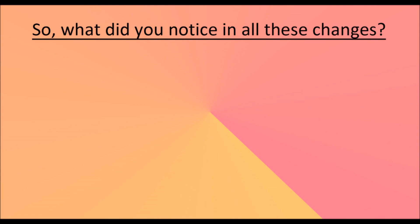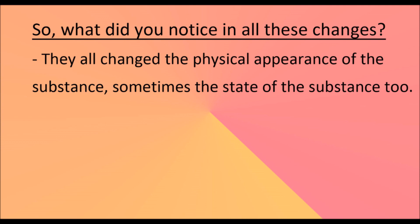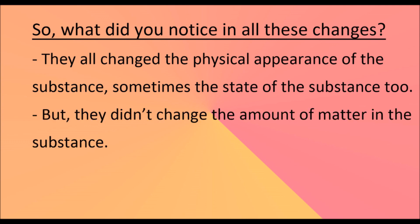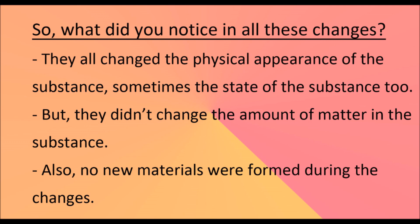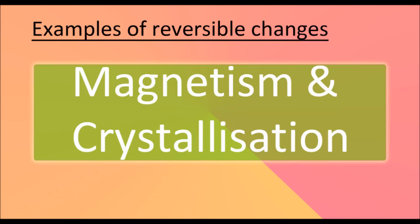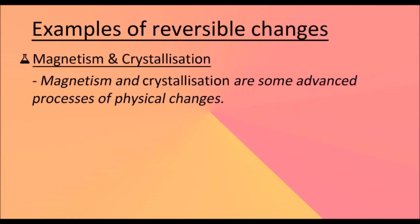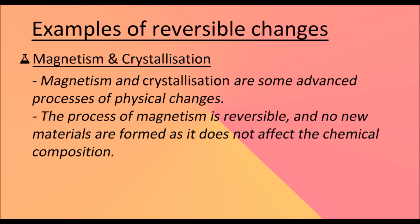In all these changes, you can notice that they changed the physical appearance of the substance, and sometimes the state of the substance too, but they didn't change the amount of matter in the substance. Magnetism and crystallization are some advanced processes of physical changes. The process of magnetism is reversible and no new materials are formed, as it does not affect the chemical composition.